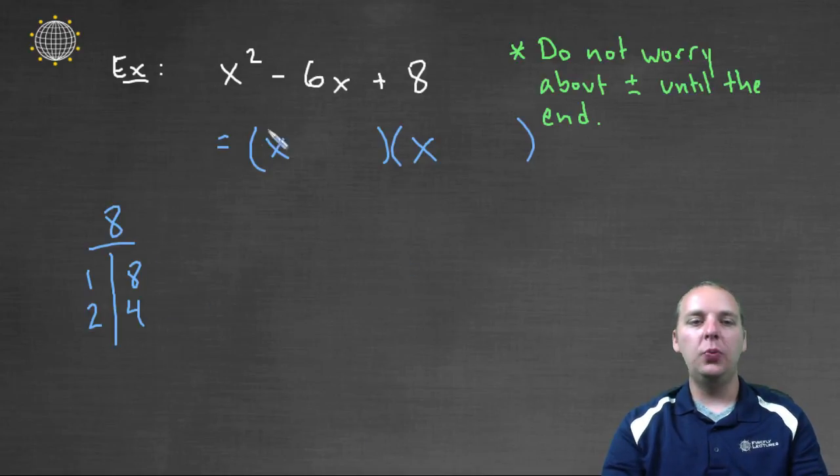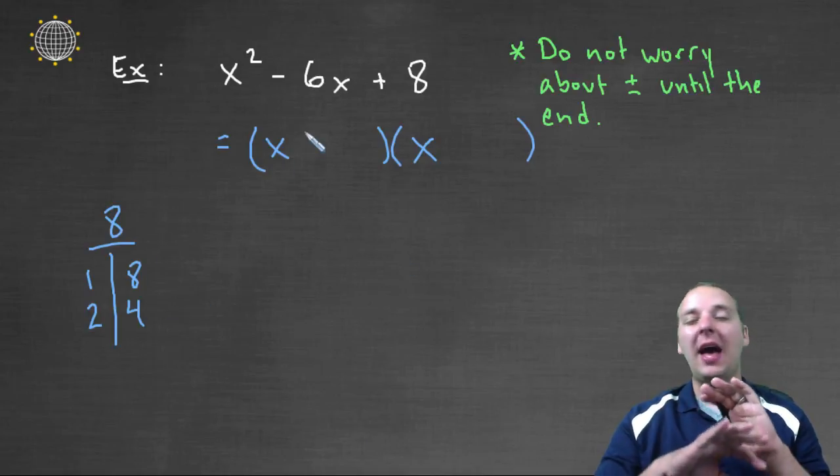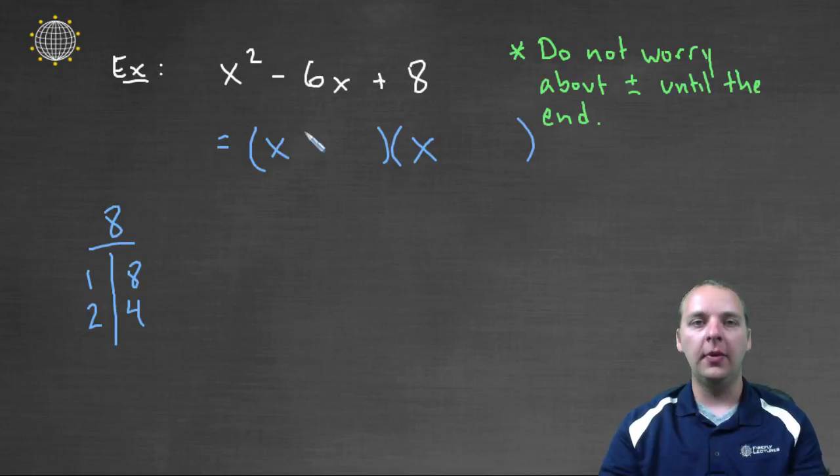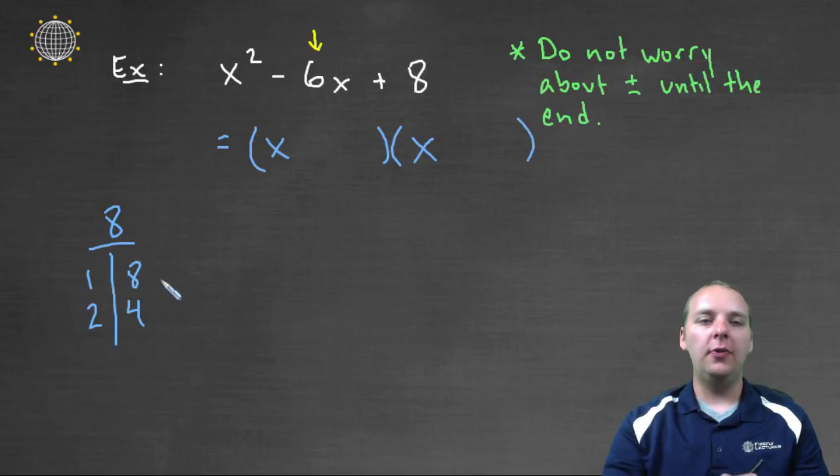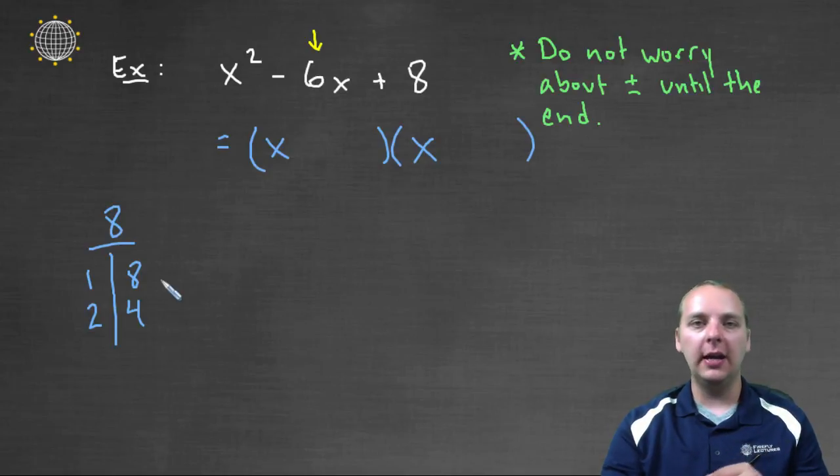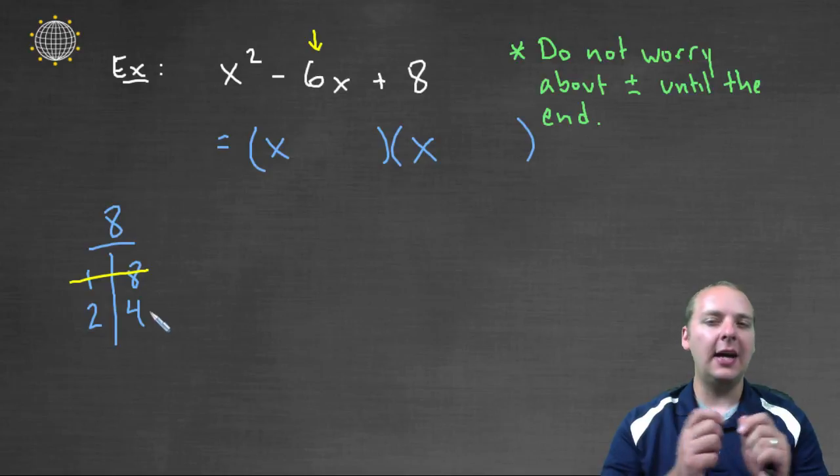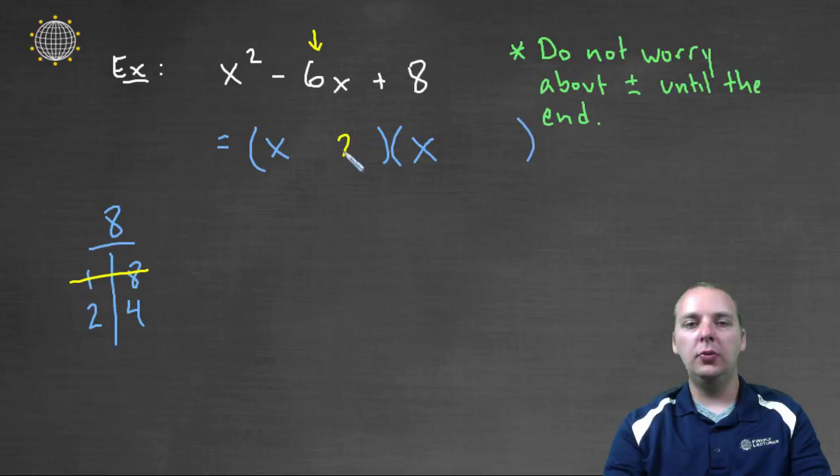So now here's the way I think about the next part. I look through this list, and I see which of these, if I could have the signs be any way that I want them, could possibly add up to a negative six. Well one and eight, I don't care if you have positive one and negative eight, or negative one and negative eight, or I don't care what signs you have, there's no way this could combine to give you a six. You're either going to get seven or nine, maybe positive, maybe negative, but it's not going to be six. But two and four on the other hand, if the signs were right, that could give you a negative six.